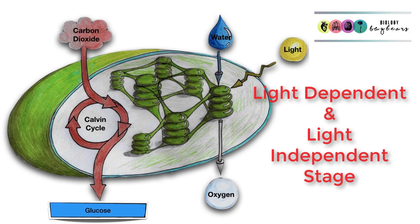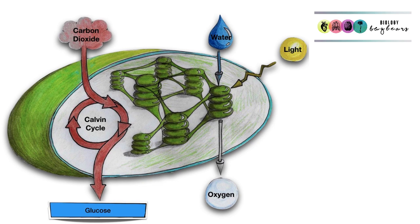The light stage or the light-dependent reactions happens in the granum or the grana, the stacks of thylakoids, and it involves the photolysis of water. So that's very unique to the light stage.